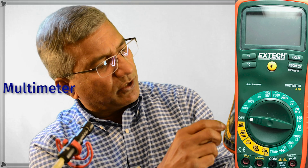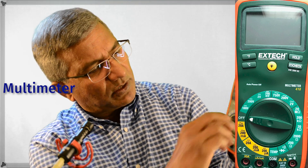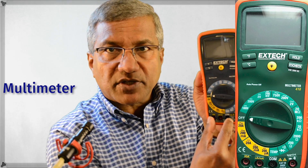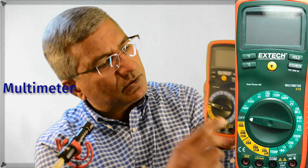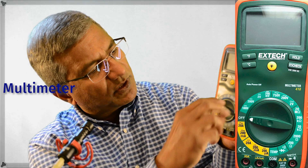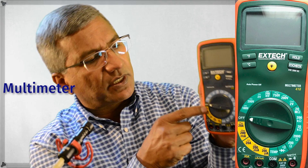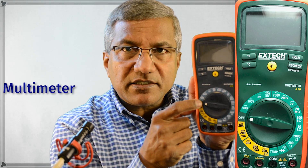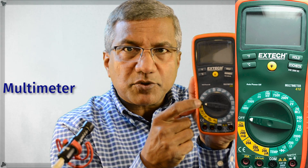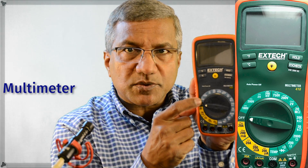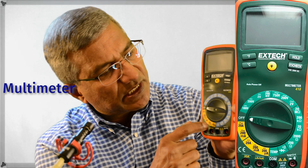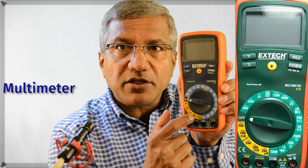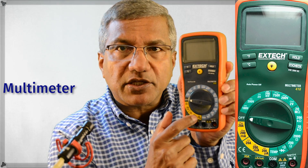When you're trying to measure current, after you put those cables in as described, if it's AC current you put the selector switch on AC current. If it's DC current, then you put it on DC current.